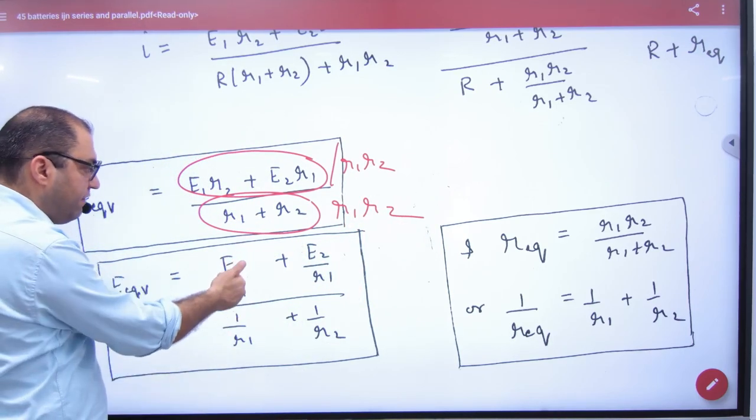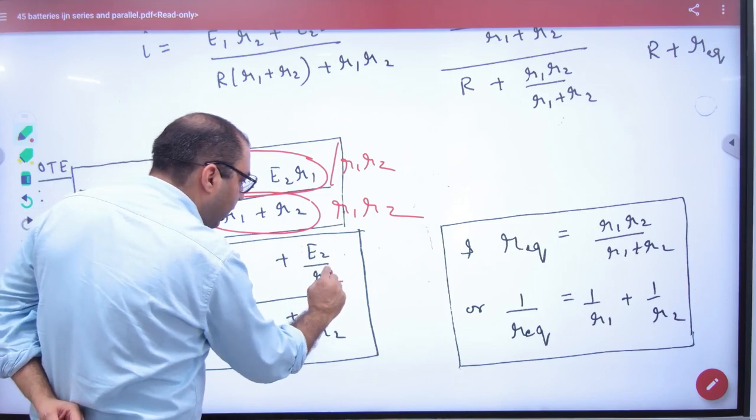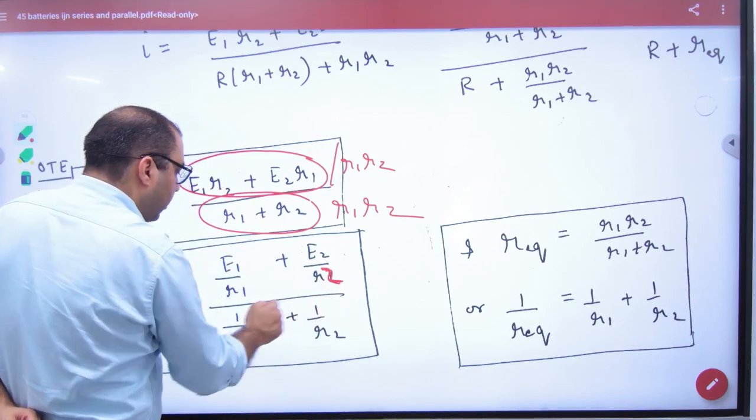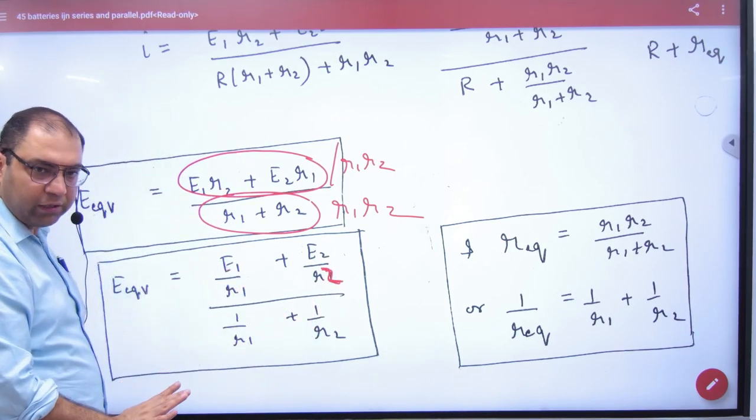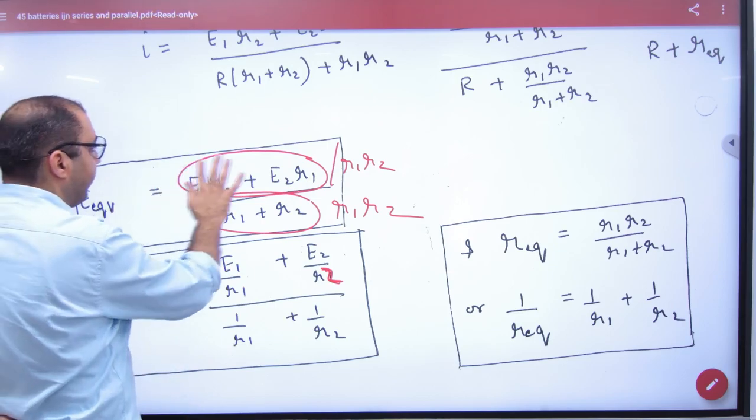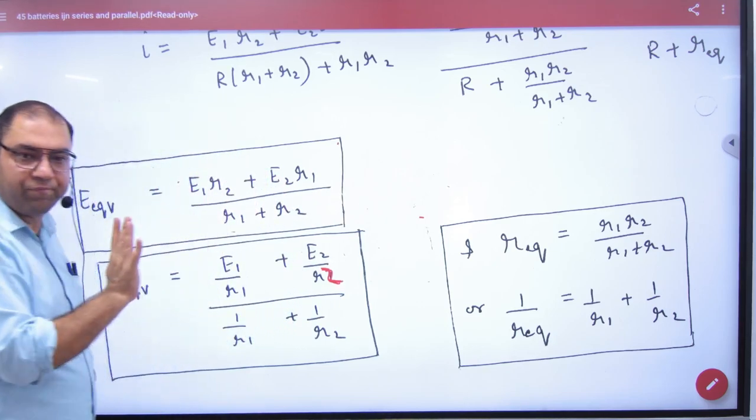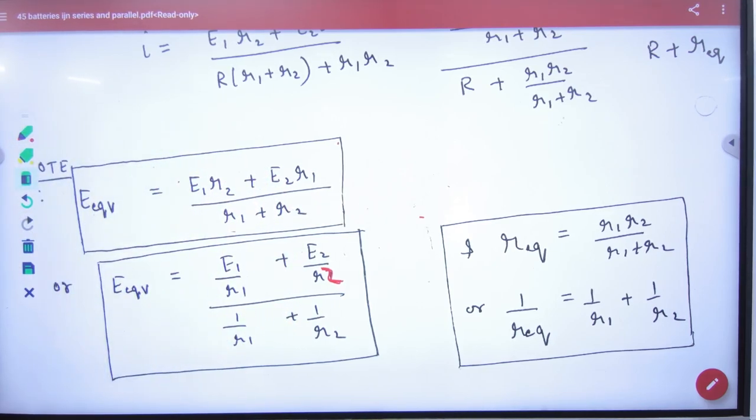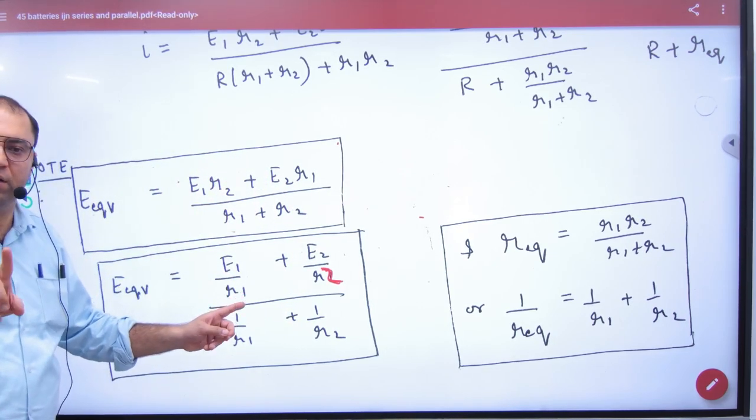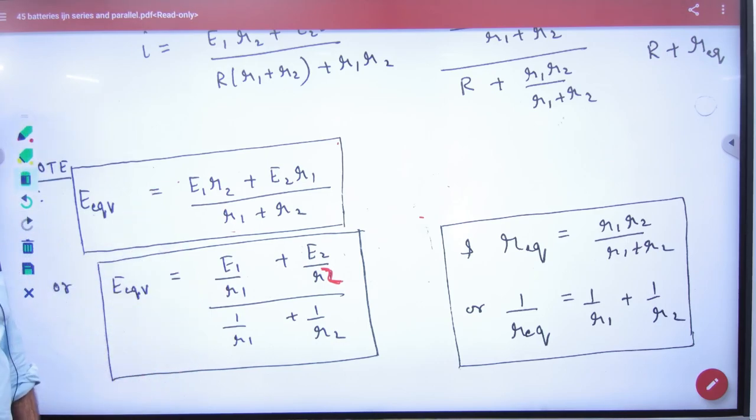So the answer will be E1 by R1 plus E2 by R2, divided by 1 by R1 plus 1 by R2. What do you have to do? You have to note this formula. Equivalent is this. Both of them, note the formula and register it.